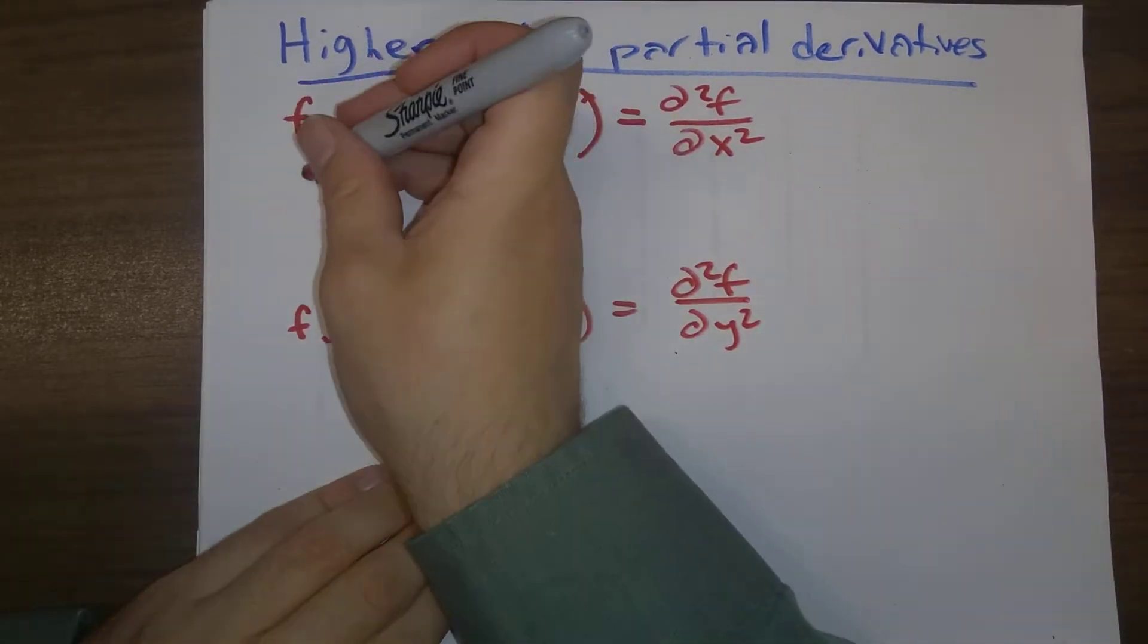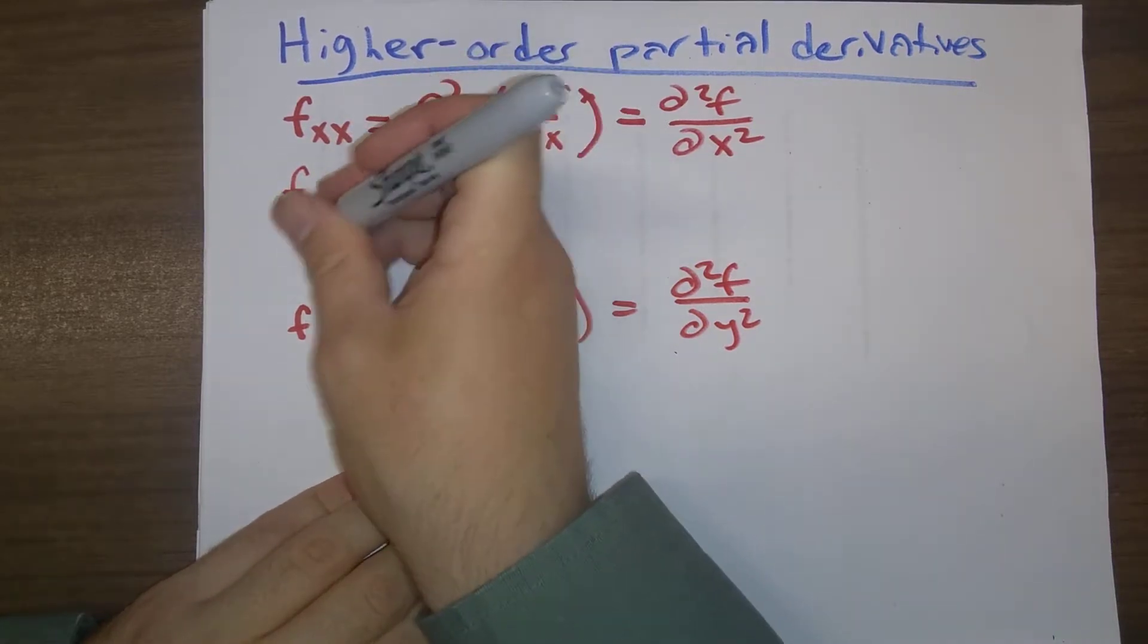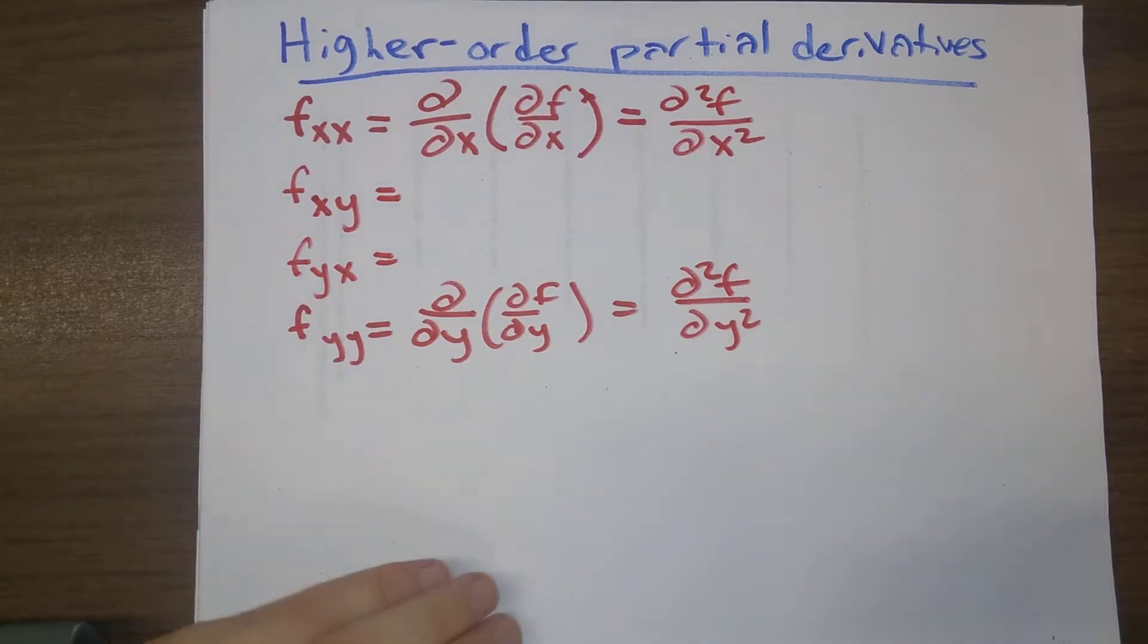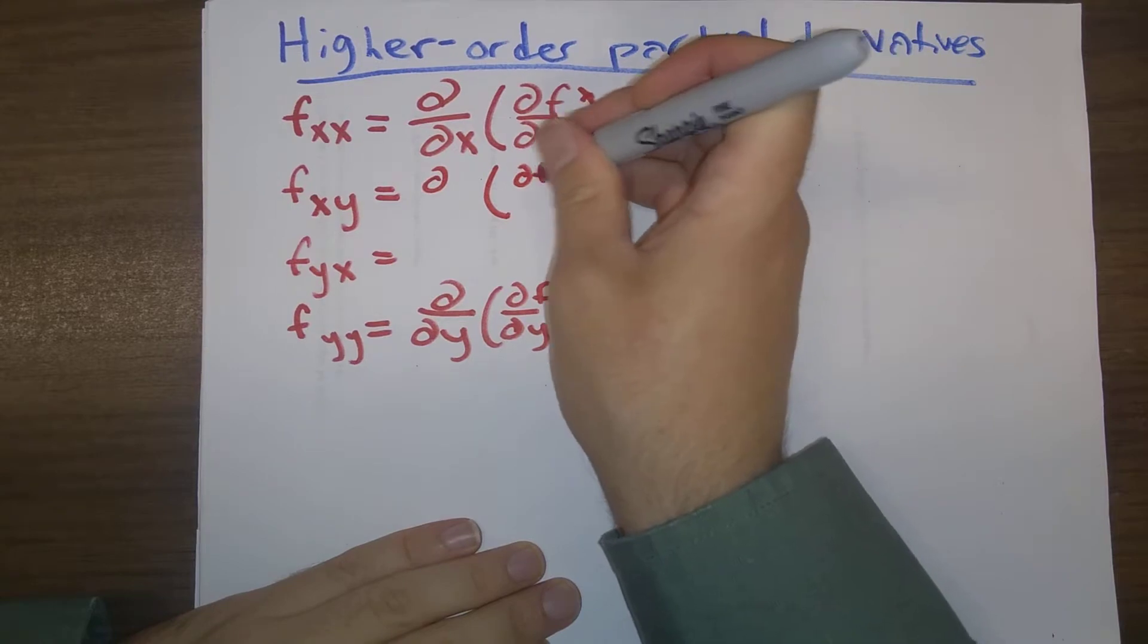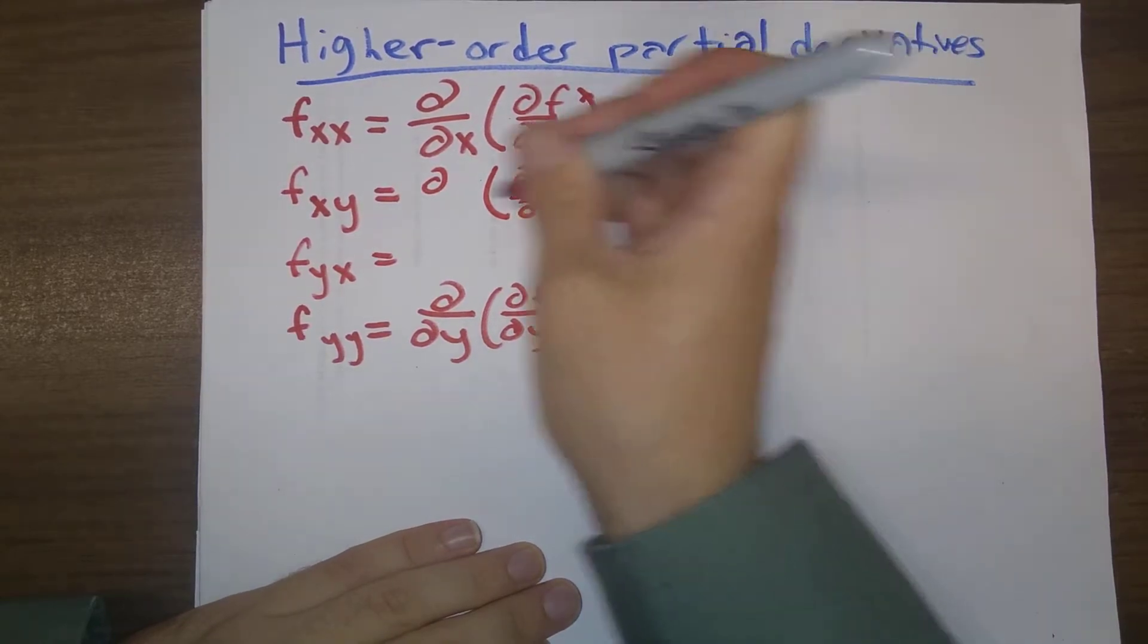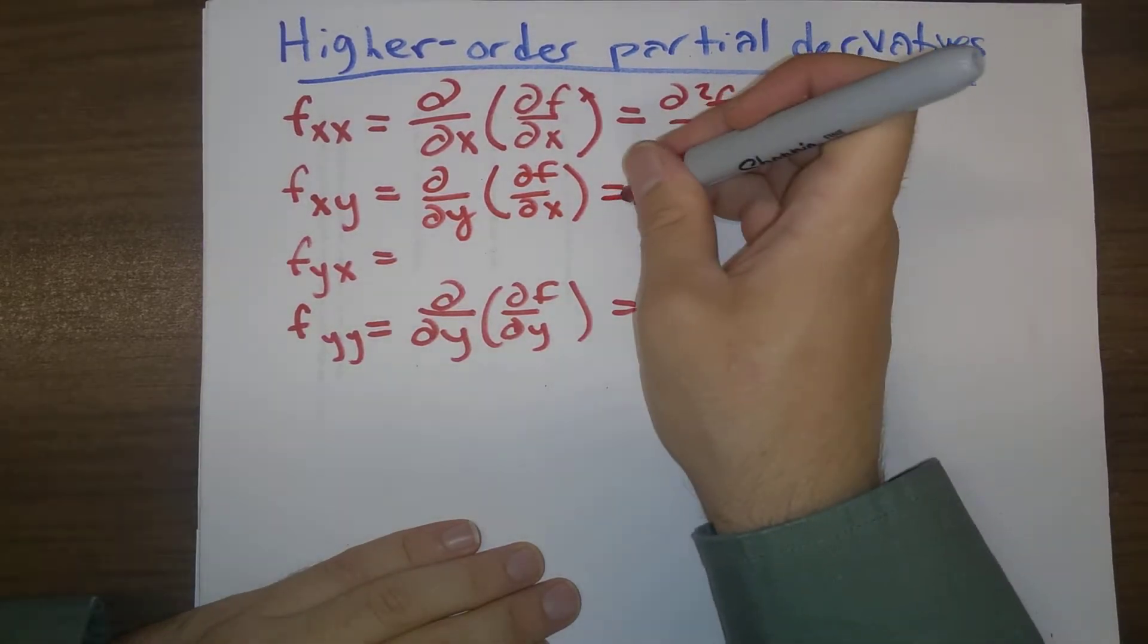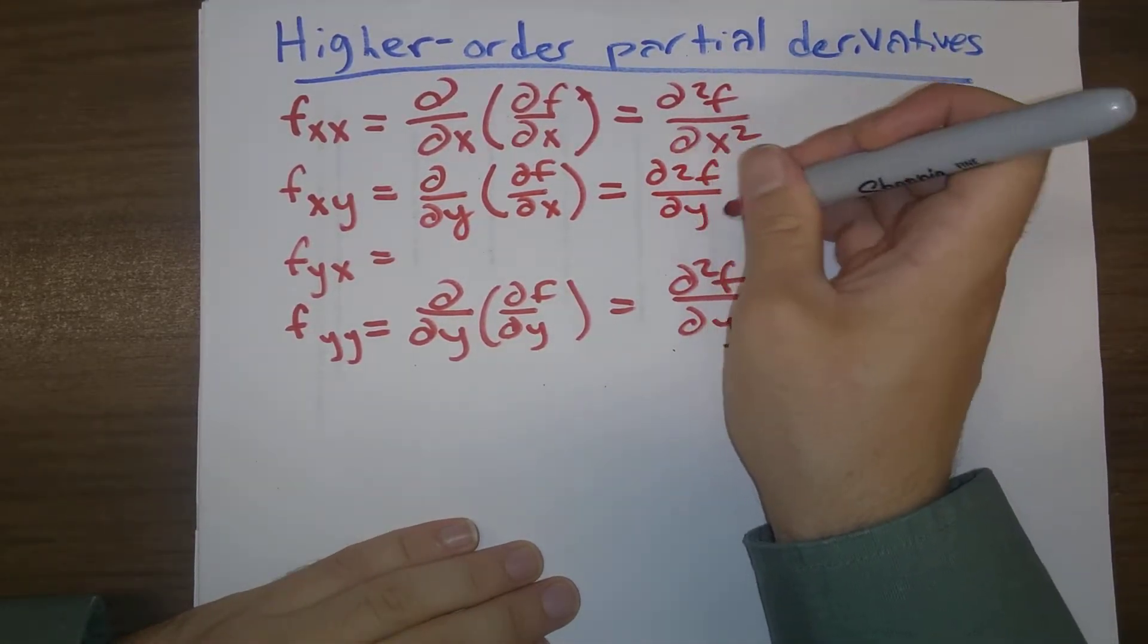But then, we can also take partial derivative with respect to x and then with y. So fxy would be first you take a partial derivative with respect to x, and then you take a partial derivative with respect to y. So the notation is d squared f dy dx.